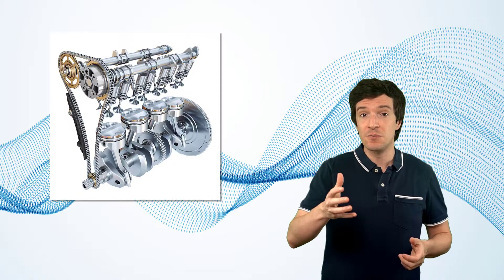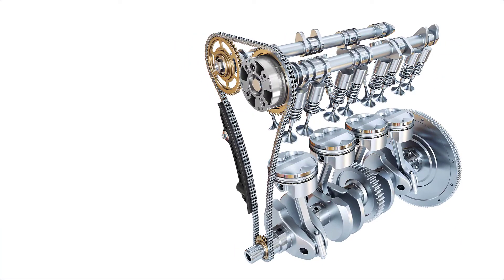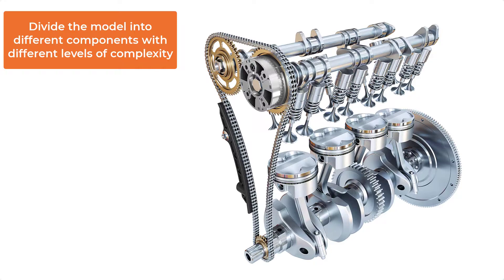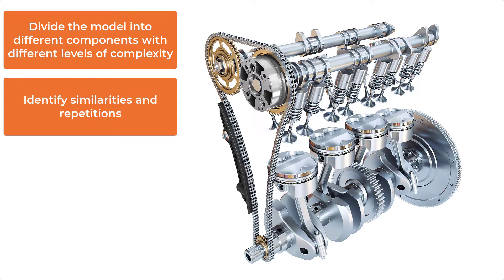Let's take the components of a combustion engine as an example. First, divide the model into different components with different levels of complexity and focus on just one at a time. For example, the shaft, the pistons, the valves, and the gears can be created separately and then assembled together. Then, look at the model to identify the similarities and repetitions — pistons, cams, valves, even the chain links are repetitions of the same geometry that have different orientations in the final assembly.